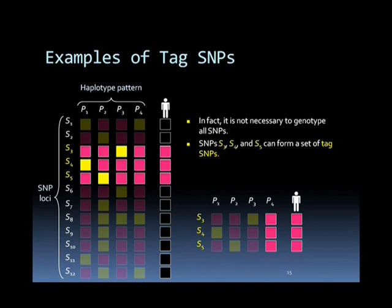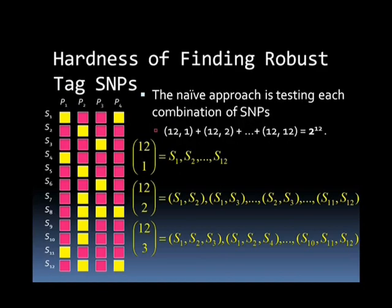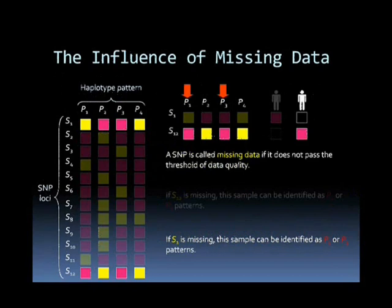In fact, it is not necessary to genotype all SNPs. SNPs S3, S4, and S5 can form a set of tag SNPs. We can work on a larger set called robust tag SNPs, which are able to tolerate a number of missing data points. The missing rates of SNPs in a typical genotyping experiment are usually limited to 10–15%. The naive approach to finding robust tag SNPs is testing each combination, such as from combination 1 through 12, equating to 2 to the power of 12.